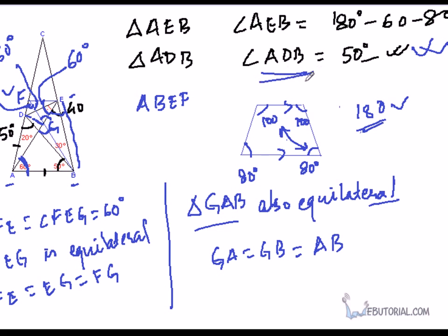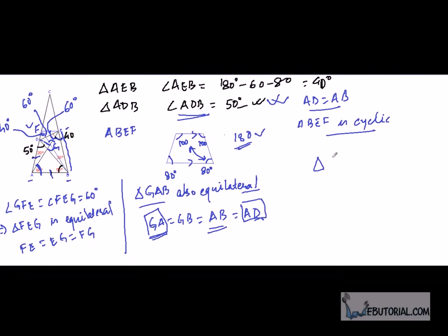If this is also equilateral, what we can observe here is that GA will be same as GB will be same as AB. Take a look at this result. We had found that ADB is 50 degrees and AD was same as AB. So AD is same as AB. We have AB here. We can write AD here as well. Now observe GA and AD. Since these two are same, that makes triangle ADG isosceles. This triangle is isosceles with this angle 20 degrees. So obviously, these two angles are going to be 80 degrees. Angle ADG equals 80 degrees. This implies that angle FDG is going to be 100 degrees.